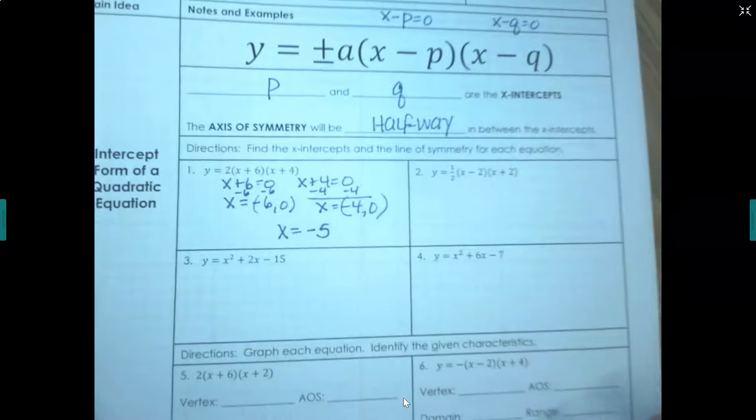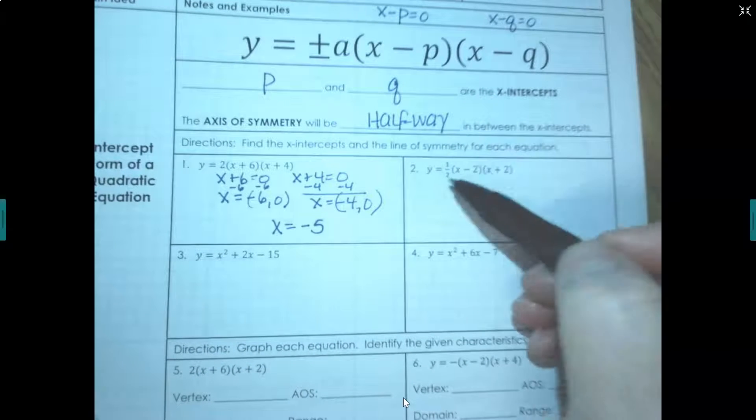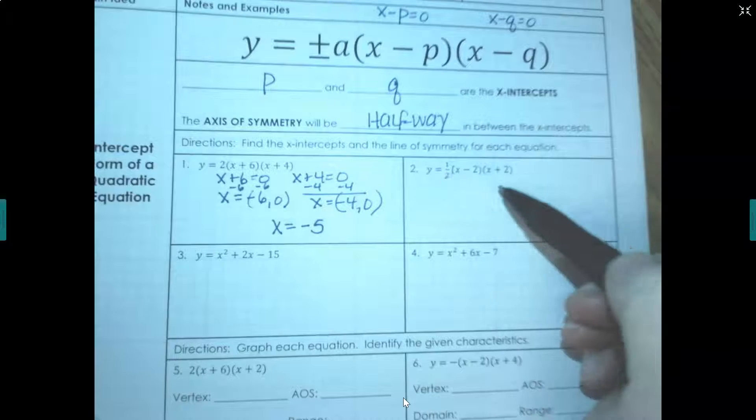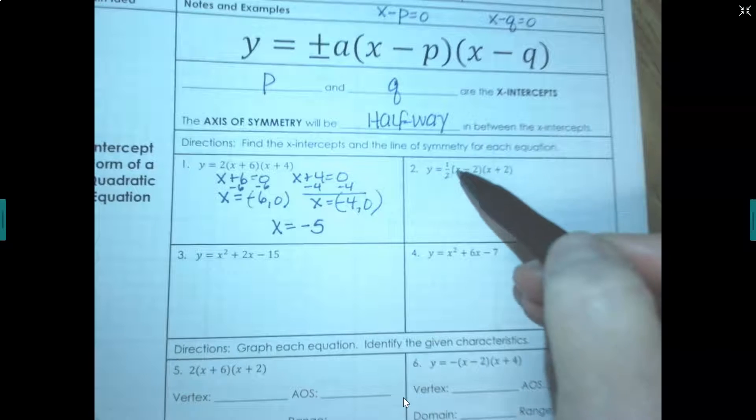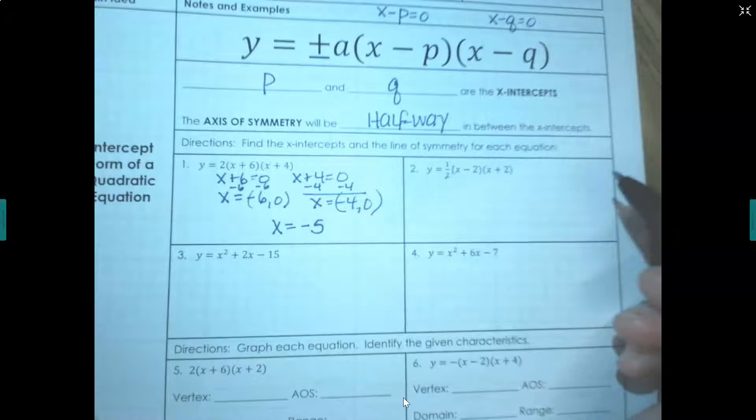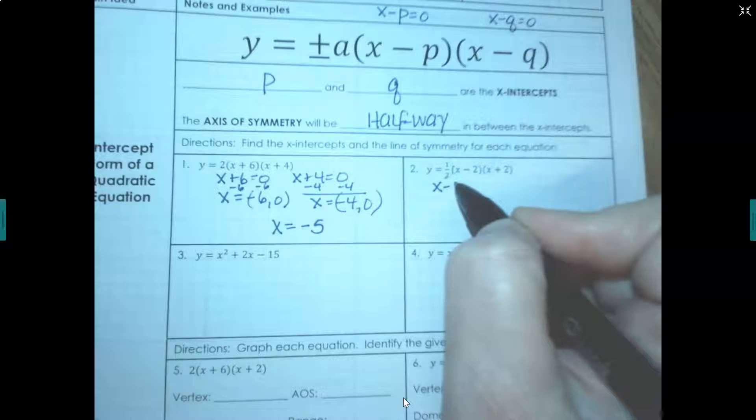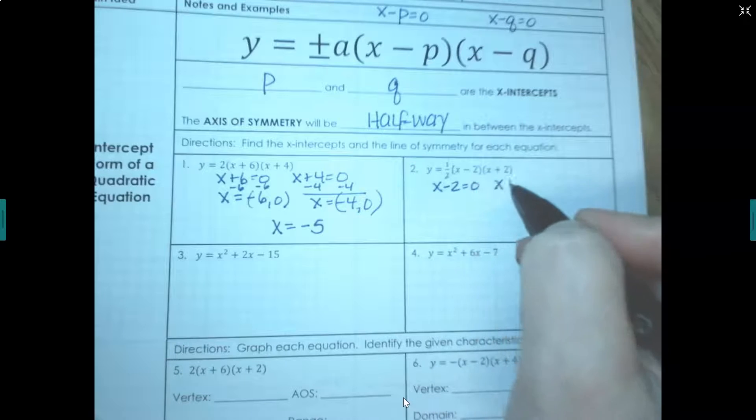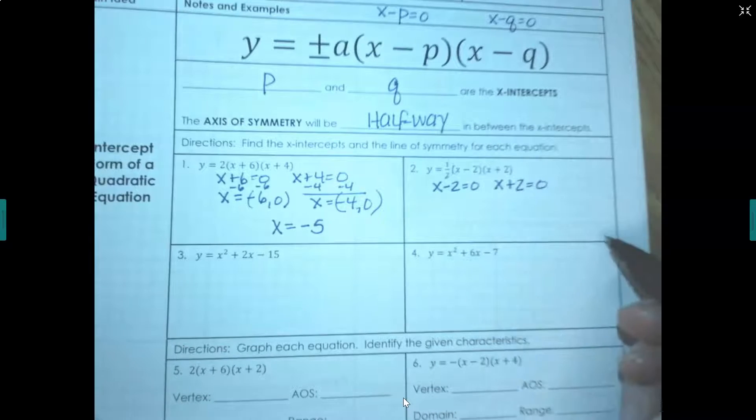Okay, let's try it again. Let's get our x-intercepts. So there's no variable at this number out front so we don't have to worry about it. We only have to worry about solving if there's a variable involved. So we have two parentheses. One is x minus 2 equals 0. The other is x plus 2 equals 0.